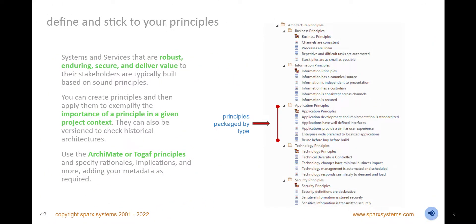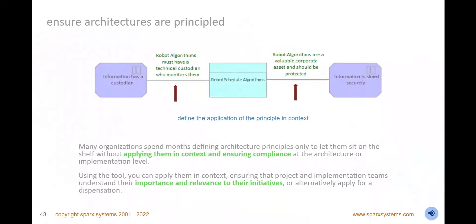Define your principles and encourage enterprise and solution architects to adhere to them. Create business, information, application, technology, security principles, and more. You can define properties such as descriptions, rationale, implications, and more to ensure they are well understood and used appropriately. Show the principle's applicability to a particular solution or context or offer dispensations when it does not comply. Ensure your architectures are principled and that project and implementation teams not only know the applicable principles but can see how an architect has applied them. Use relationship notes to describe how a principle applies to a given part of the model, at a package or element level, and show these in diagrams that unambiguously illustrate the level of compliance.